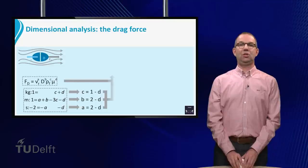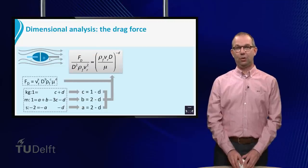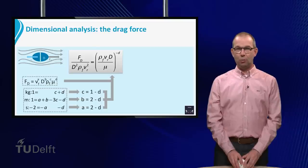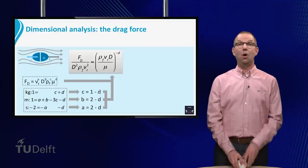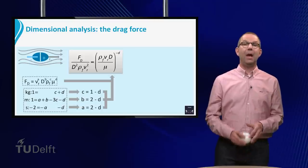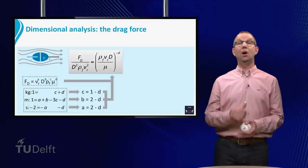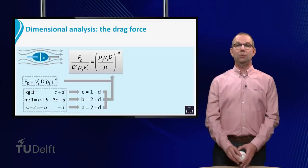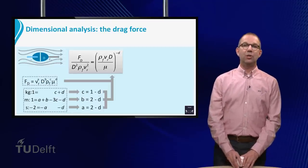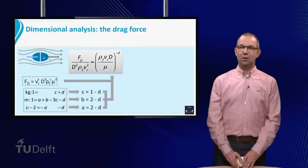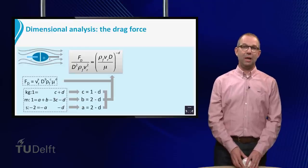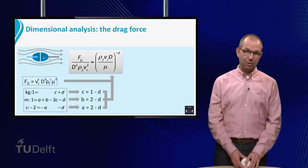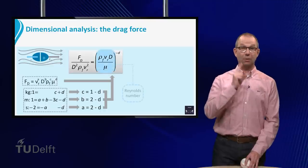Now group this as FD over D squared times rho F times Vr squared on the left side. And everything that still has the unknown power D on the right side. The result is given on the sheet. We see that the drag force divided by some term that makes the left hand side dimensionless is now connected to a dimensionless parameter, which we recognize as the Reynolds number.